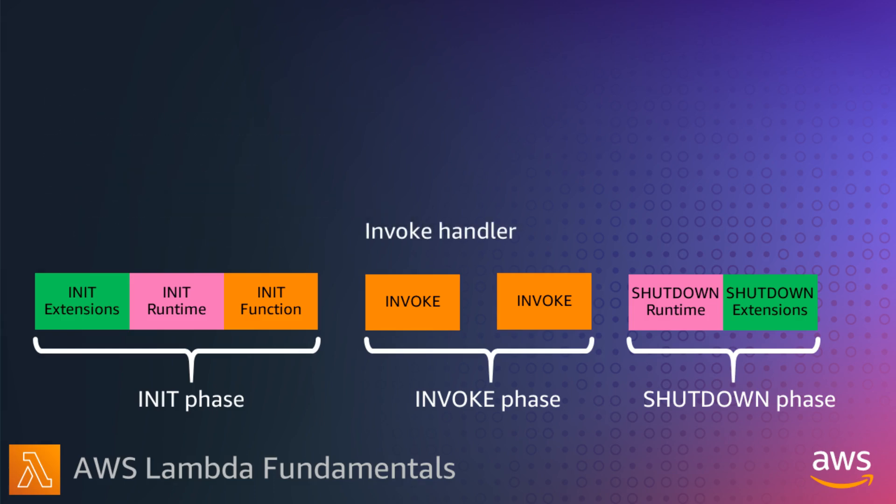The invoke phase then starts and Lambda runs the function handler code, which receives the event payload and processes your business logic. Once the invoke is complete, the execution environment stays available to run the function handler code again for another new invocation.